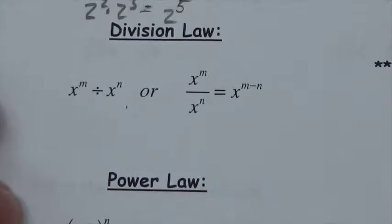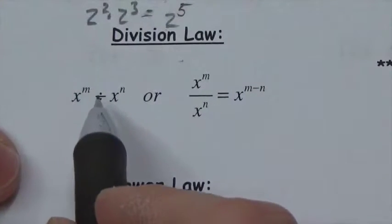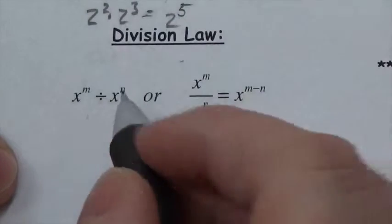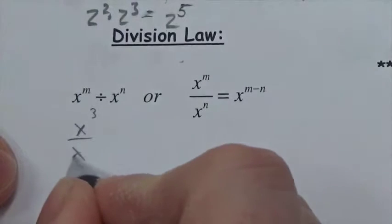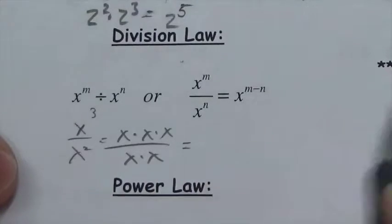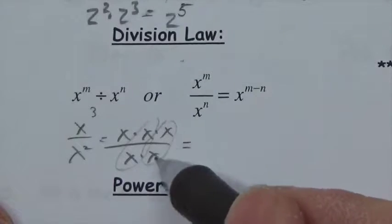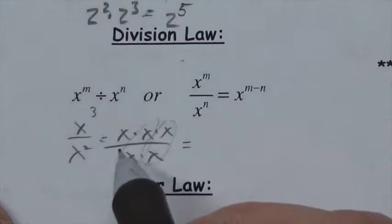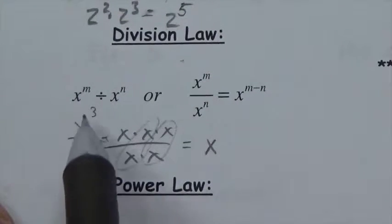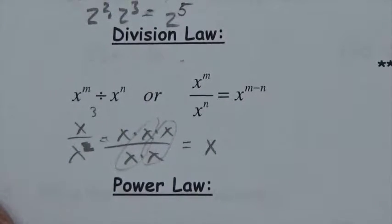The division law is the opposite in terms of operation. When we've got two powers and we're dividing them, we simply subtract the exponents. If you've got x cubed over x squared — that's x times x times x over x times x. We can pair up x divided by x equals 1 twice, so we're left with just one x. So x cubed over x squared is simply x to the first.